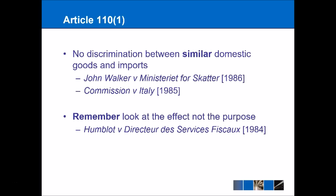In the Humbert case, a tax imposed by the French government charged imported cars based on the size of their engine. French cars — things like Citroën and Renault — have smaller engines than big German cars like Volkswagens and BMWs, so it was an inadvertent mistake by the French government. But as we've said, the European Court of Justice doesn't look at the purpose of the taxation, only the effect. And the effect in this case was discrimination between the French domestic cars and the imported German cars under the tax regime.